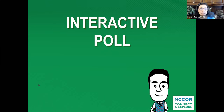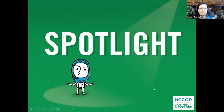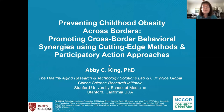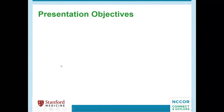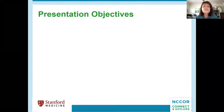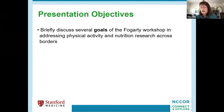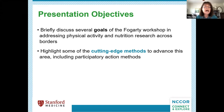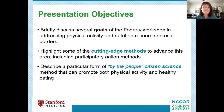Our spotlight today is childhood obesity research across borders: the physical environment, and I am now pleased to turn it over to Dr. Abby King. I'm going to be presenting on a few things briefly: first, to discuss several goals of the Fogarty workshop; then highlight some cutting-edge methods to advance this area, including participatory action methods; and finally, describing a particular form of citizen science — by the people — that we think can promote both physical activity and healthy eating on both sides of the border.